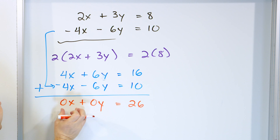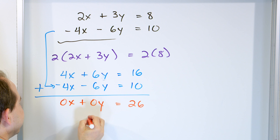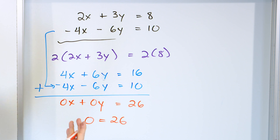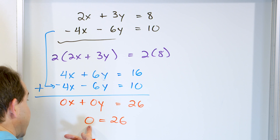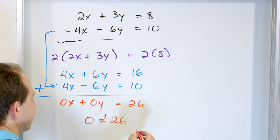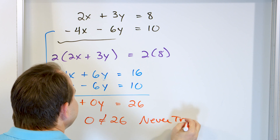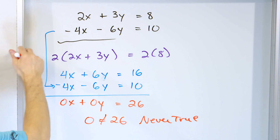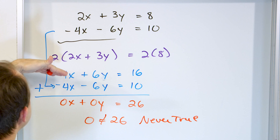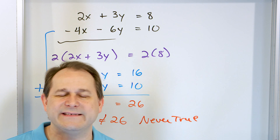So what we have is 0x plus 0y — which is really just 0 — equals 26. Can it ever be true that 0 equals 26? No, it's never true. So in the course of doing all of these legal operations — multiplying by 2, adding them together — we get a nonsense answer.